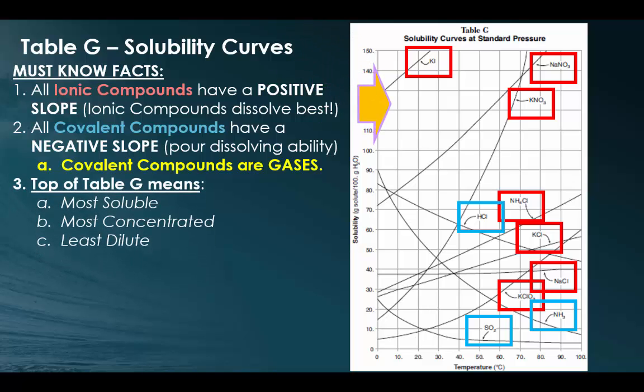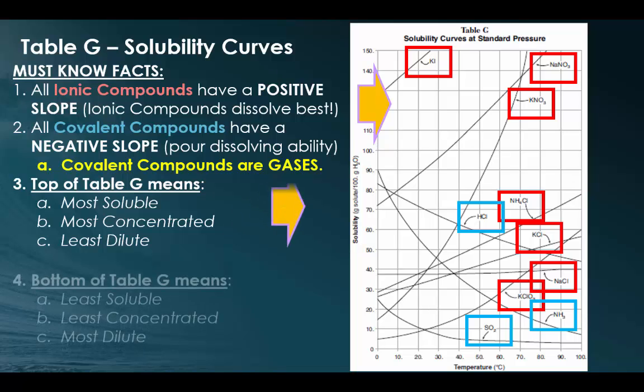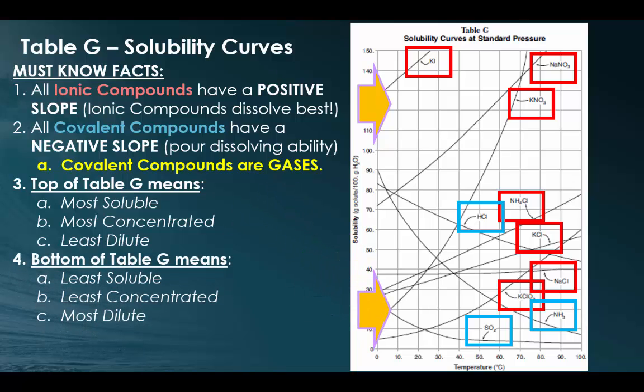On the very top of table G, everything that's on top, which is KI, NaNO3, and KNO3, these are going to be the most soluble, they will make the most concentrated solutions, and are the least dilute solutions. But at the bottom, these are going to be our least soluble, they're going to also create our least concentrated solutions, and they're going to be the most dilute.